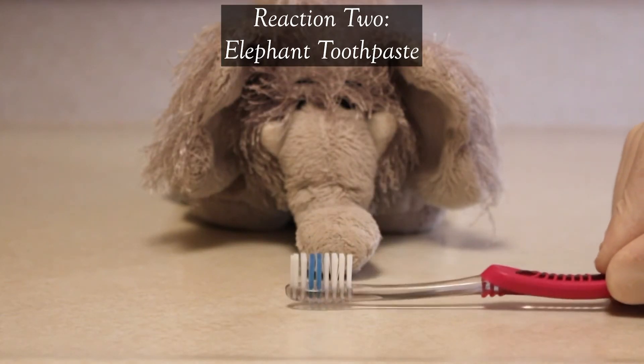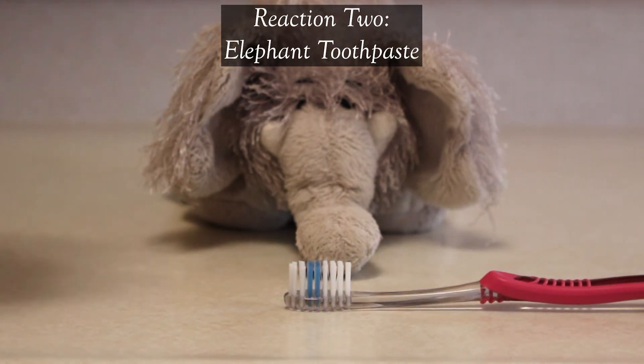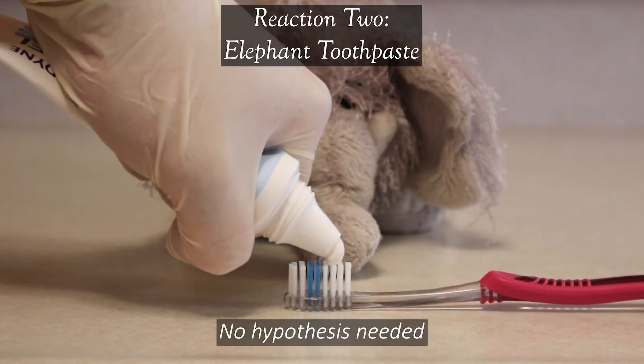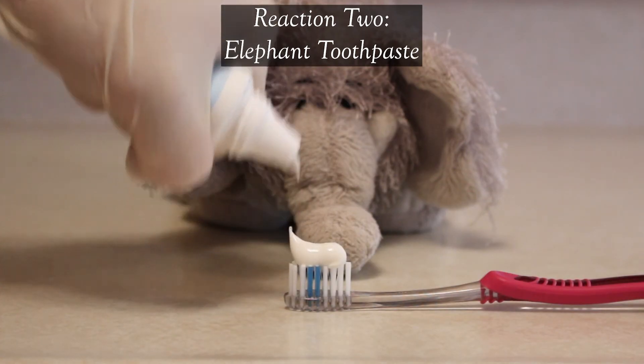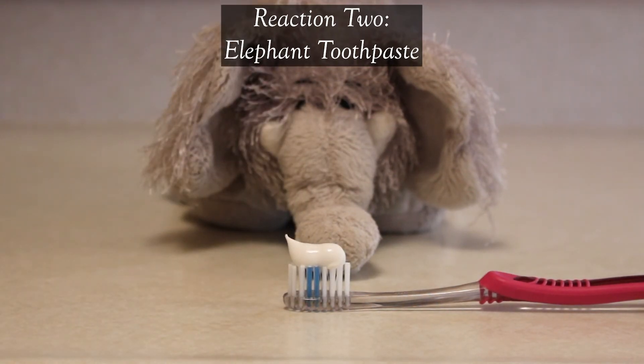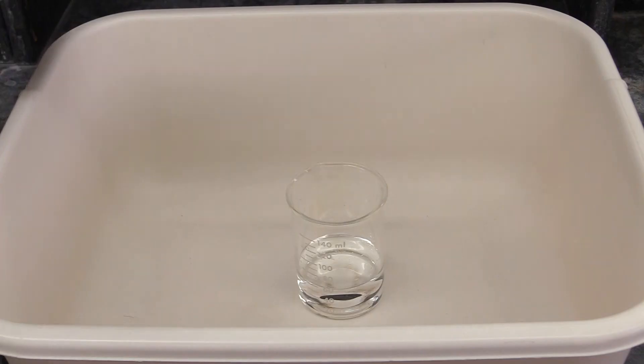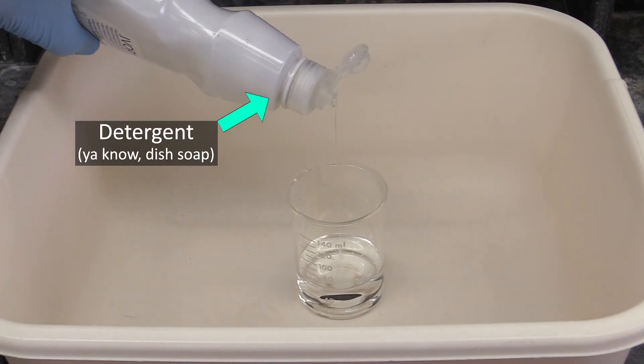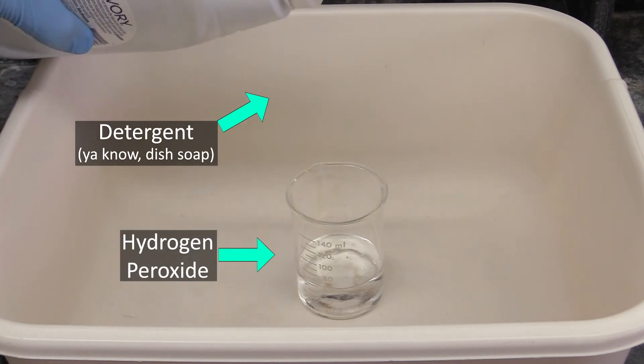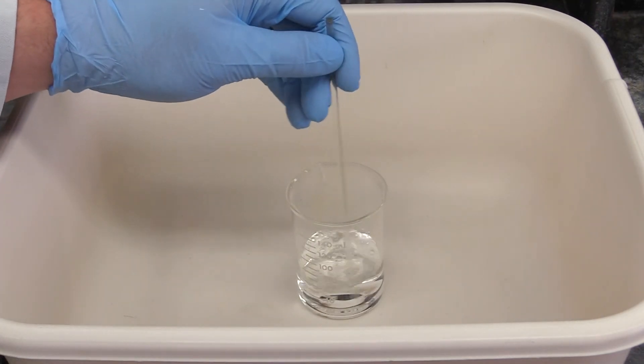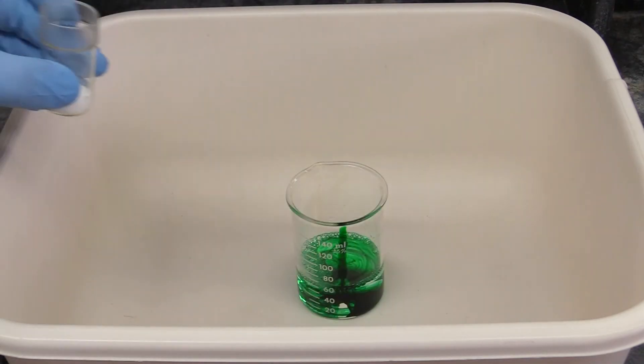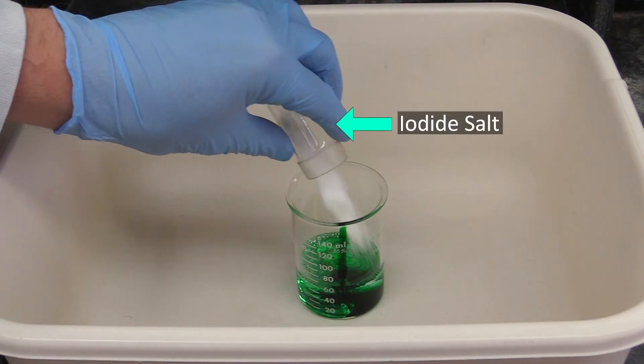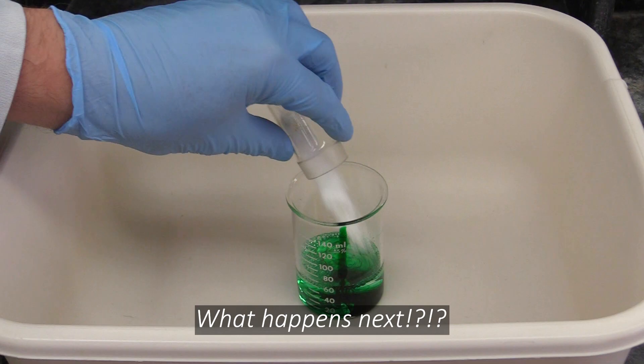For your second gas-forming reaction, you will make elephant toothpaste. There's no hypothesis to form for this one, it's mostly an observational exercise. It will give you a chance to be a little creative with the toothpaste's color, so that's neat. To make the toothpaste, you'll mix some detergent into a solution of hydrogen peroxide. Add a little food coloring if you want, then add a small scoop of sodium or potassium iodide, and stand back and observe.